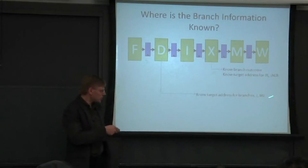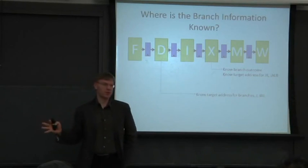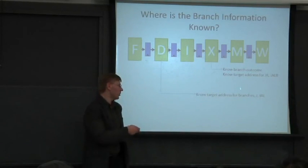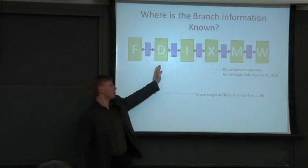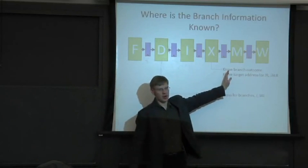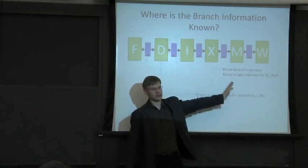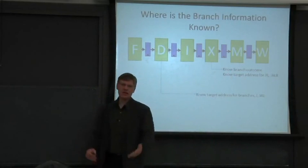But that's not really helpful unless we know which way the branch is going or the branch outcome. Because even if we know, at least for jumps and jump and links, we know the outcome - it's taken. But for conditional branches, we may not know that until somewhere over here. So we can't necessarily use that information until later in the pipe for branches to do something useful in the naive approach.